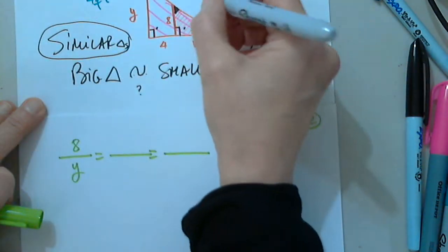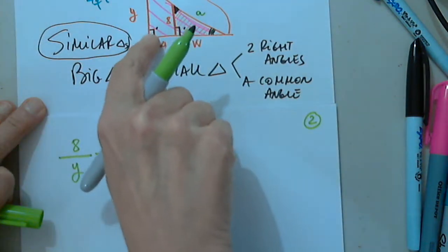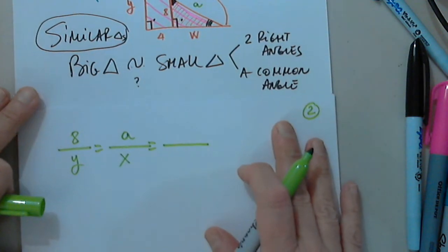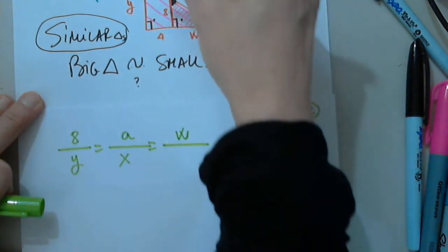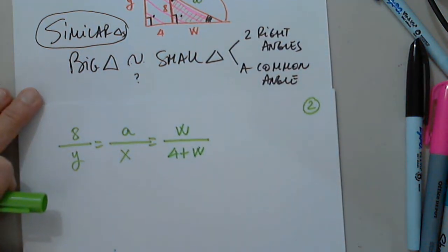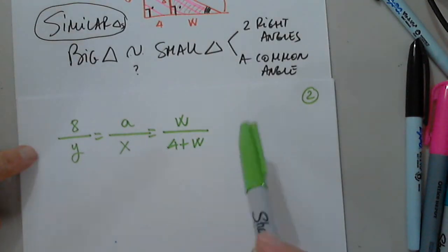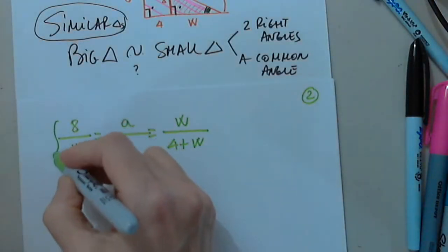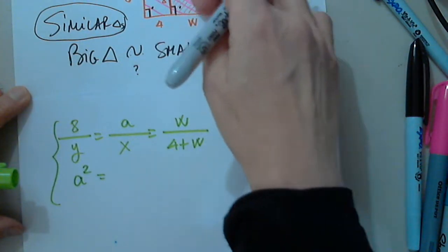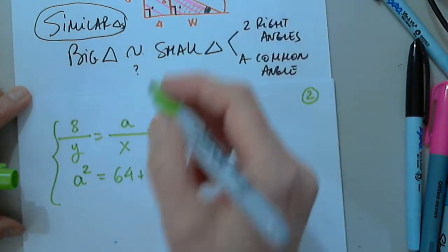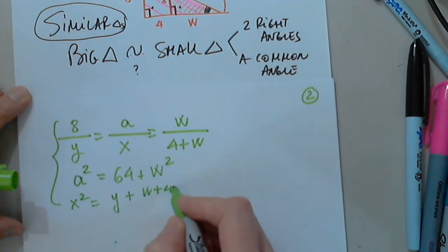Now I can write proportions. It's very important how I write them — the top sides must come from the same triangle, the bottom sides from the other. Starting with the common angle: opposite side in the smaller triangle is 8, in the big triangle is Y. I call the next unknown side A, so A over X. And the last pair: opposite is W in the small triangle and 4 plus W in the big triangle. Additionally, by the Pythagorean theorem: X squared equals Y squared plus W plus 4, everything squared.